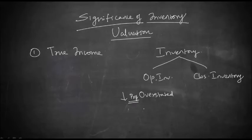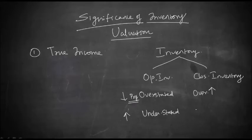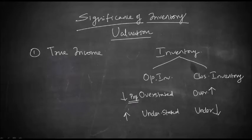If you have understated opening inventory, your expenses would be less, so your profit would be inflated. We have the opposite effect on closing inventory: if you have overstated closing inventory, your expenses are less and profit is more; if you have understated closing inventory, you have more expense and less profit. Inventory valuation also affects your balance sheet and liquidity. So, if you want to know the true income of the business entity, you should do correct valuation of inventory.